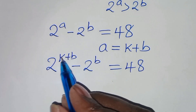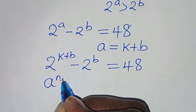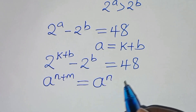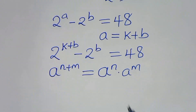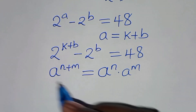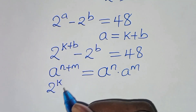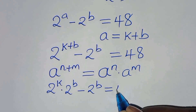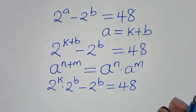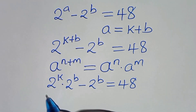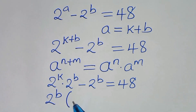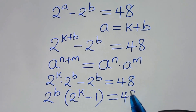So here we have 2 to the power of k plus b, minus 2 to the power of b, this is equal to 48. Now, 2 to the power of k plus b is in the form of a to the power of n plus m, which we can express as a to the power of n times a to the power of m. Applying this exponent property, we have 2 to the power of k multiplied by 2 to the power of b, subtract 2 to the power of b, equals 48. Since 2 to the power of b is common, we factor it out, so we have 2 to the power of b times, in parentheses, 2 to the power of k subtract 1, this is equal to 48.